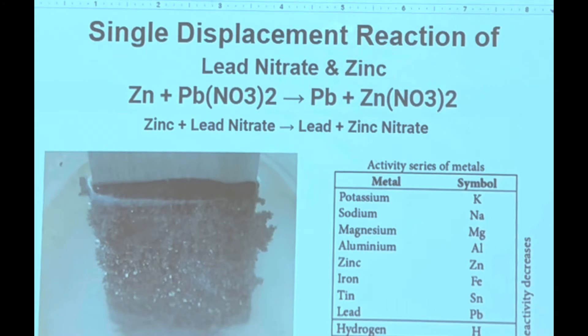Any metal on the activity series can replace the metals beneath them. So since zinc is higher than lead, lead nitrate becomes zinc nitrate and the lead grows on the outside of the zinc. Look at those amazing crystals.